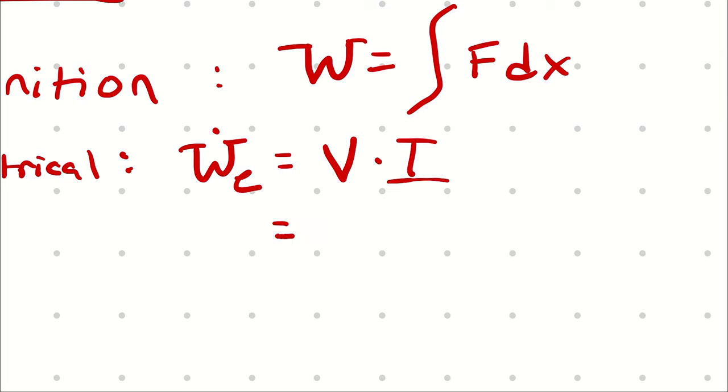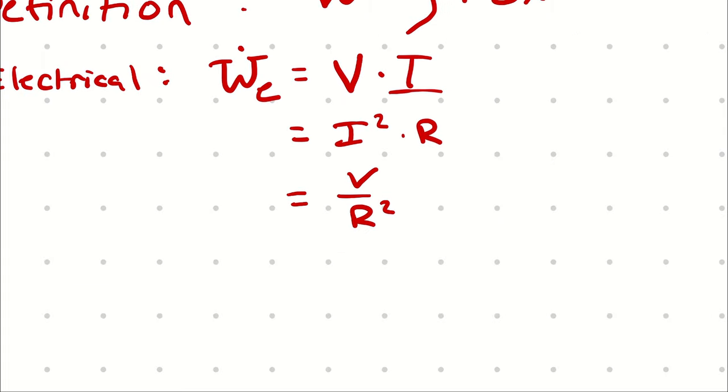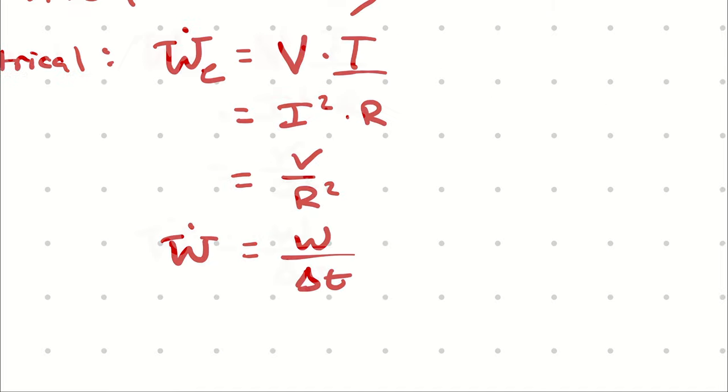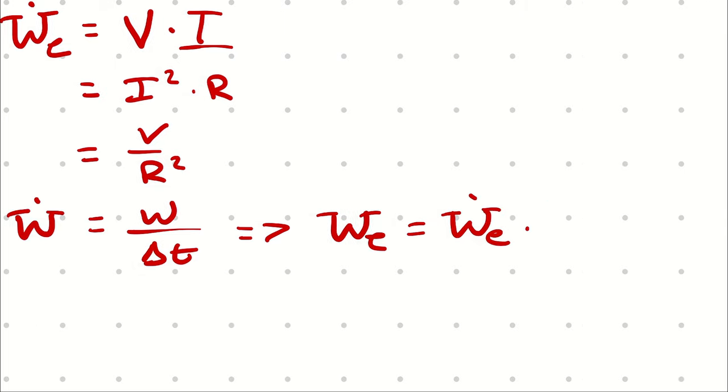We could say, since voltage is IR, we could write this as current squared times resistance, or we could say voltage squared divided by resistance. And if we really wanted to write this as a work, we can always remember that power is going to be work divided by time across an entire process, in which case the electrical work could be written as electrical power times duration.